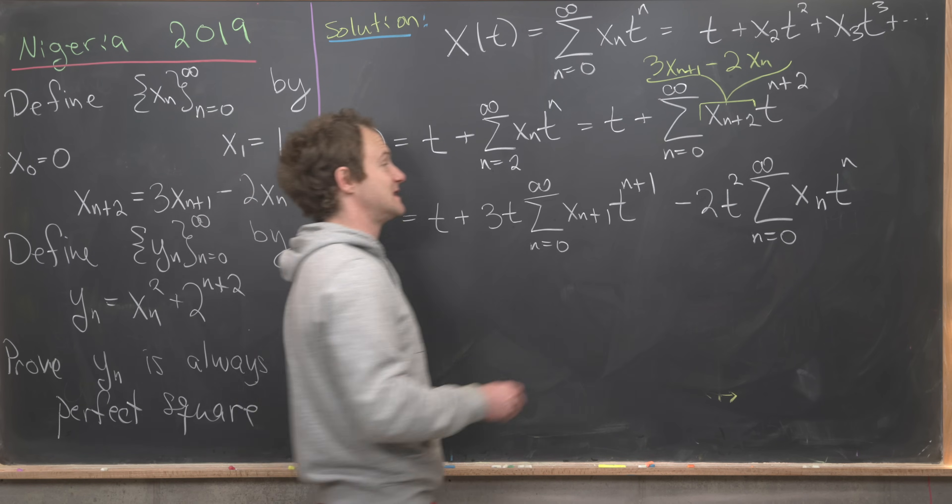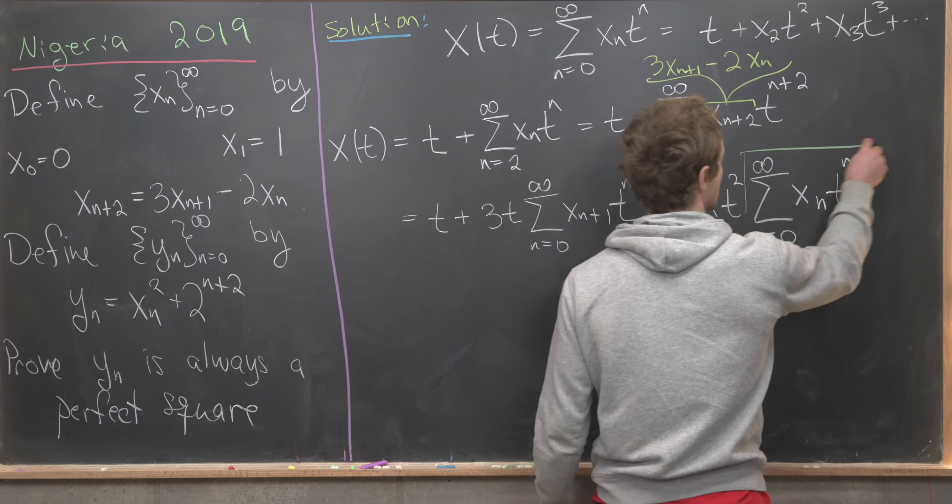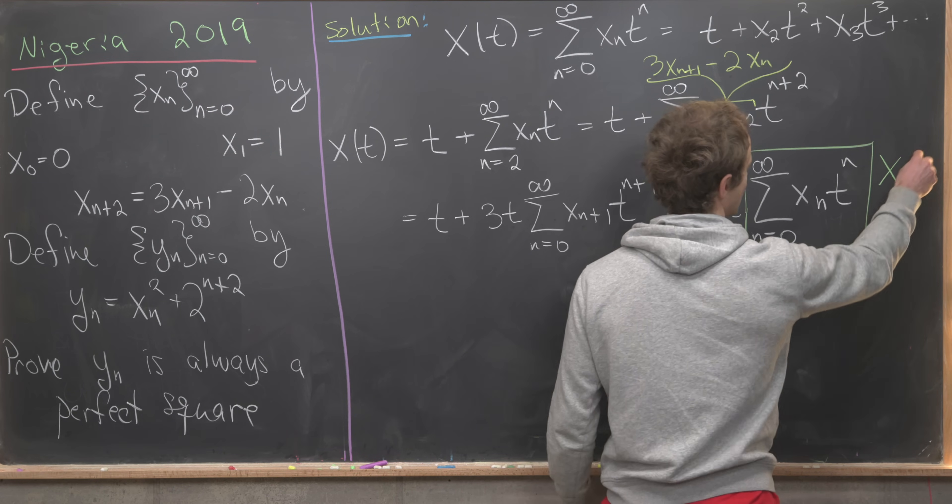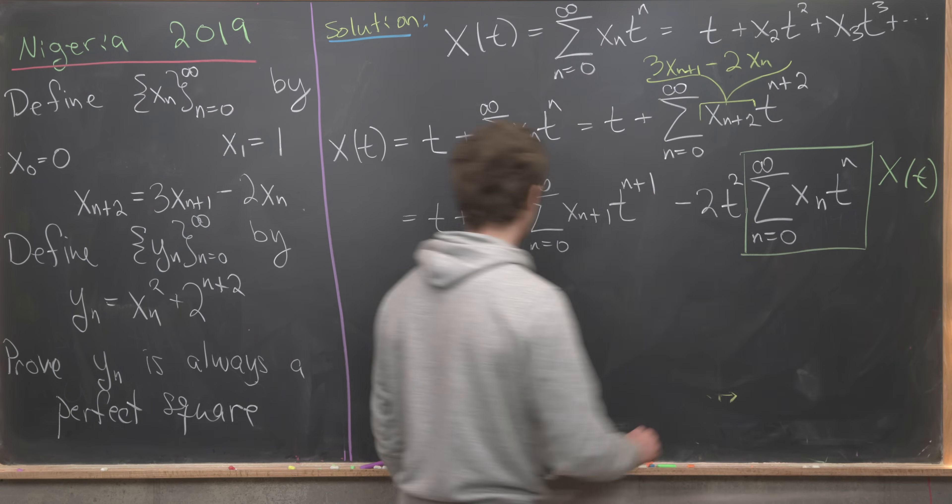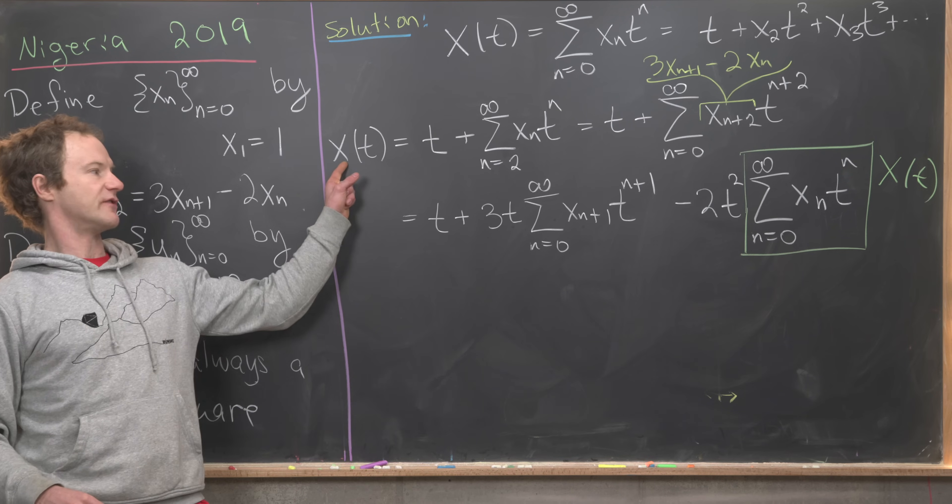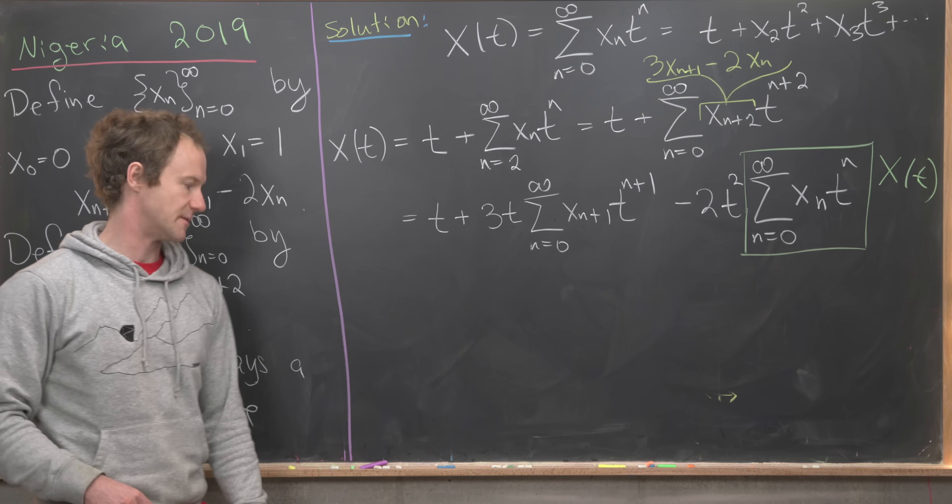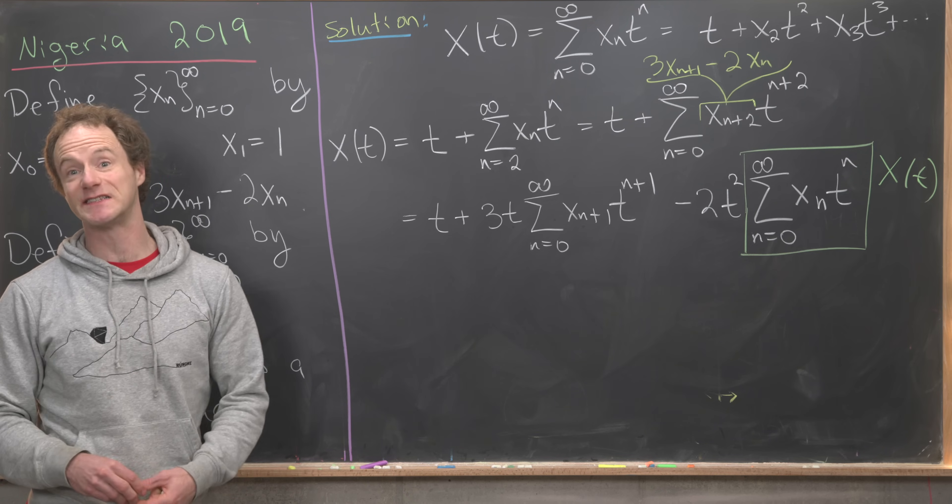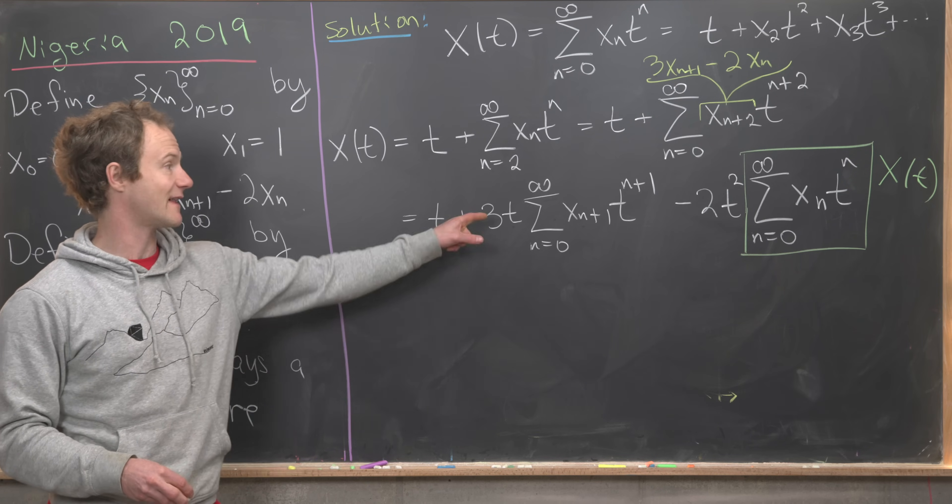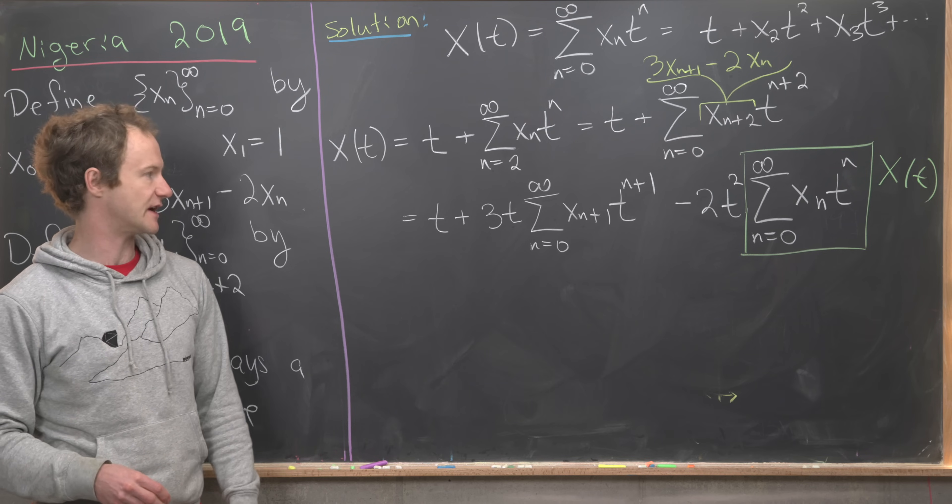We'll notice that this last term over here is in fact just our generating function, capital X of t. So we've already written our generating function in terms of itself. Now we want to look at this sum and notice that via a fairly simple re-indexing we can realize that this is also our generating function.